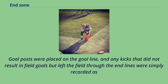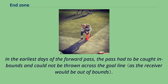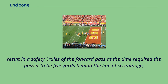Goal posts were placed on the goal line, and any kicks that did not result in field goals but left the field through the end lines were simply recorded as touchbacks. In the earliest days of the forward pass, the pass had to be caught inbounds and could not be thrown across the goal line. This also made it difficult to pass the ball when very close to one's own goal line, since merely dropping back to pass or kick would result in a safety.